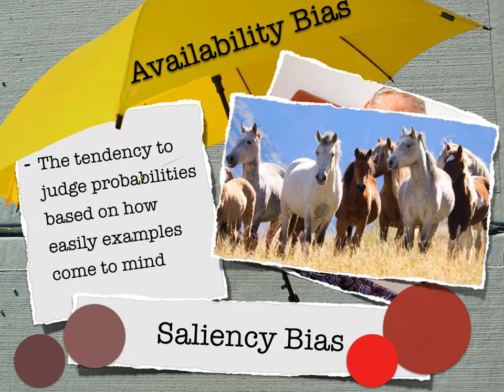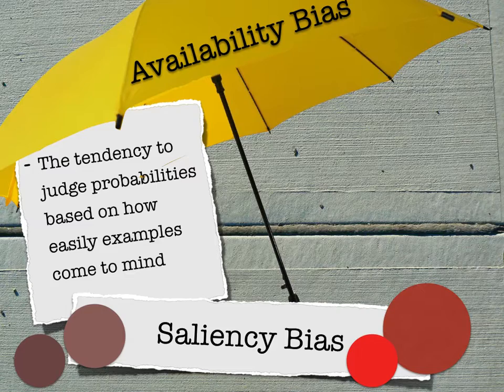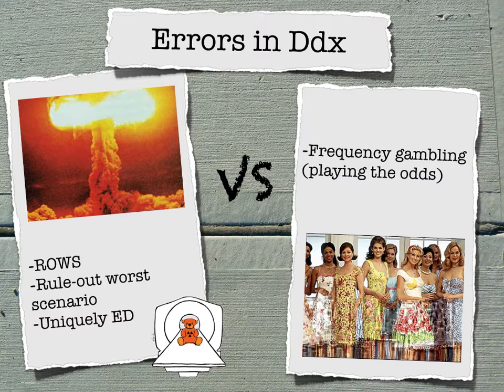Underneath that umbrella is something called saliency bias — a source of availability bias. It occurs when people are evaluating a low probability but high impact event, like a pediatric stroke. This occurs when dramatic events, whether an emotionally devastating case or a case resulting in a prolonged lawsuit, affect our decision making to the exclusion of objective evaluation of the odds. Saliency bias is something that is memorable, like a zombie being shot in the head.